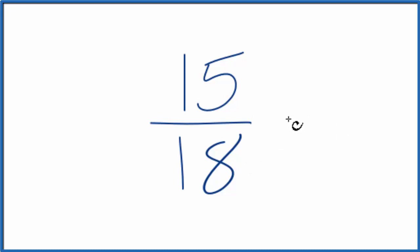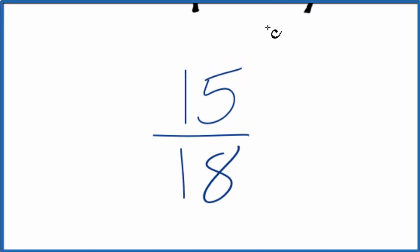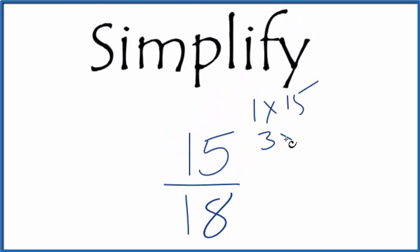What we need to do is find a common factor. Let's just list the multiples here for 15 and 18. So for 15, 1 times 15, 3 times 5, that's pretty much it.